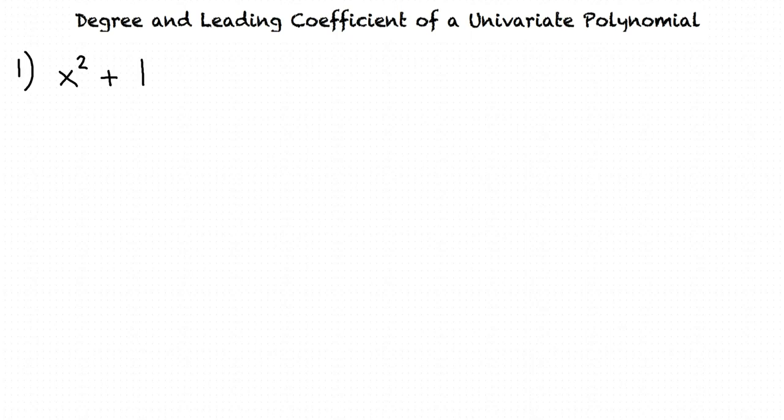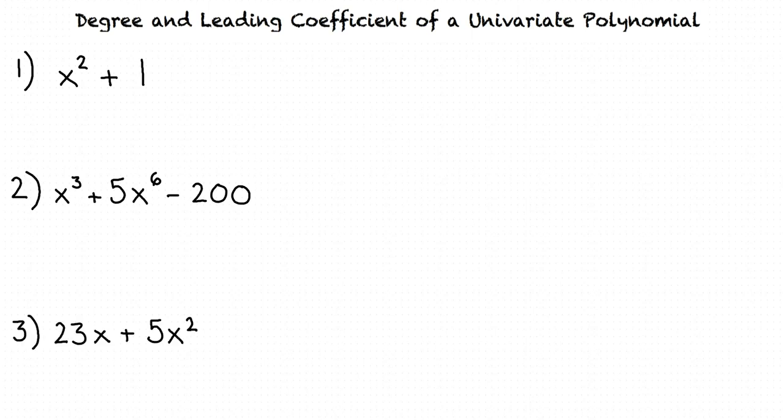Some examples are x squared plus 1, x cubed plus 5x to the power of 6 minus 200, and 23x plus 5x squared. As we can see, these expressions have only one variable, x, but multiple terms.